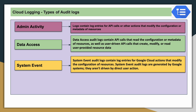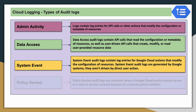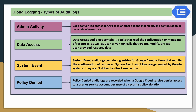System event logs capture scheduled activities — for example, if you define a dataset inside BigQuery with an expiration policy of 30 days, after 30 days the system automatically deletes it, and all that related information is captured by the system event log. Policy denied logs capture VPC Service Control related events — for example, if a user or service account tries to access a resource from a private VPC that is denied due to access policies, that transaction is captured by the policy denied log.